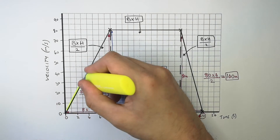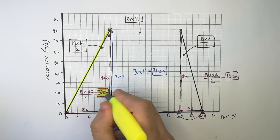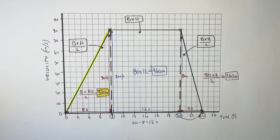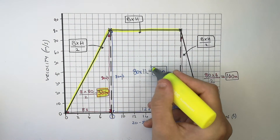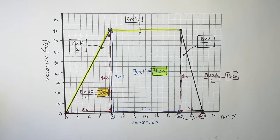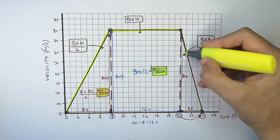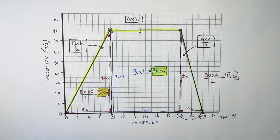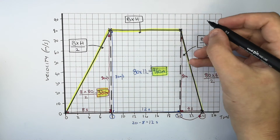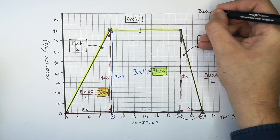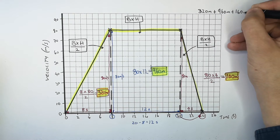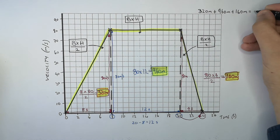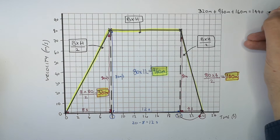So while the car was accelerating, it travelled 320 metres. While the car was travelling at a constant velocity, it travelled 960 metres. And while the car was decelerating, it travelled 160 metres. To work out the total distance the car travelled, you do 320 plus 960 plus 160, which equals 1440 metres.